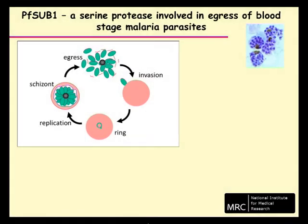The malaria parasite invades circulating red blood cells and replicates within them. In the case of Plasmodium falciparum, the causative agent of the most dangerous form of malaria, replication takes place over a period of about 48 hours, producing a number of invasive merozoites.